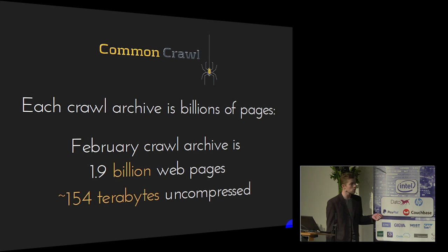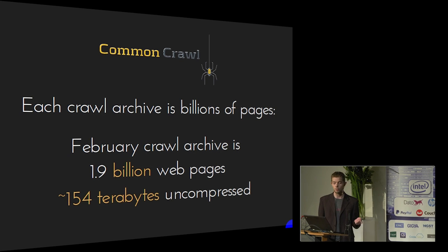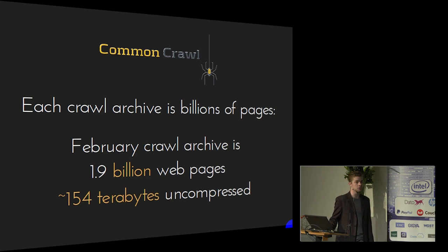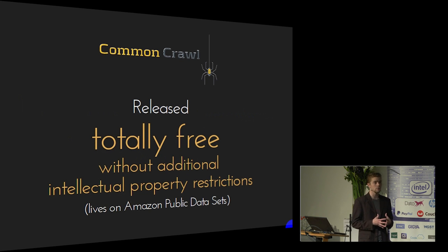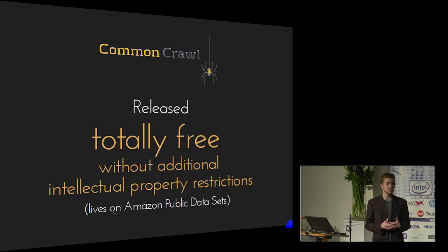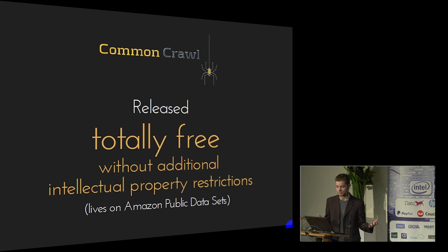As an example, the February crawl archive was 1.9 billion web pages and about 150 terabytes uncompressed. All of this is released entirely free for you to use. We don't add any intellectual property restrictions to the data, so if you want to use it for a company, go ahead — there's not a single restriction.